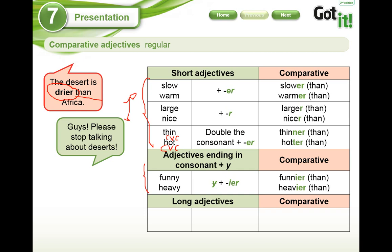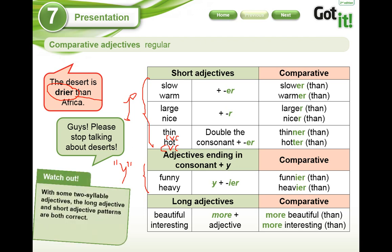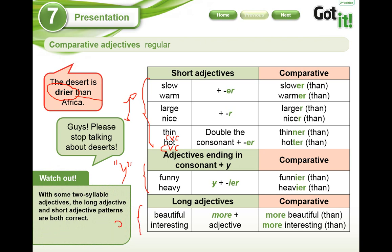And we have the long adjectives. The long adjectives have two or more syllables, so they have a different use. You have 'beautiful,' 'interesting.' We gotta use 'more': more beautiful, more interesting. For example: Tacna is more beautiful than Ica. English is more interesting than French. Lima is more dangerous than Tacna. This is for adjectives with two or more syllables — do not forget it.